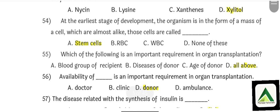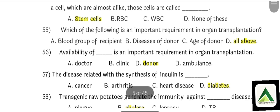Question number 54: At the earliest stage of development, the organism is in the form of a mass of cells which are almost alike. Those cells are called option number A: Stem cells. Question number 55: Which of the following is an important requirement in organ transplantation? Blood group, disease of the donor, and age of donor are all checked. So option number D: All of the above.